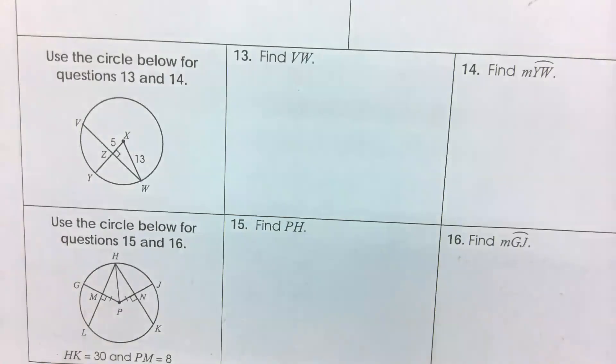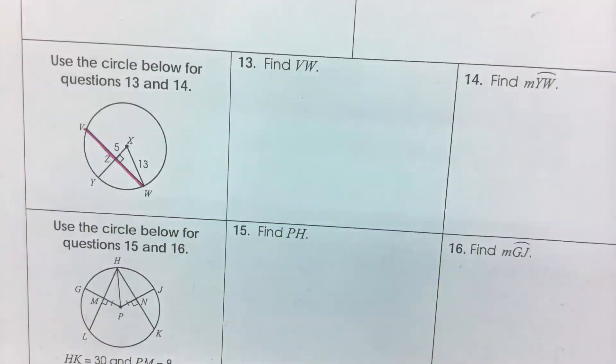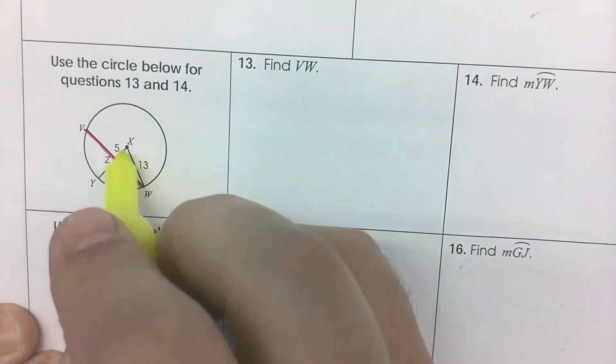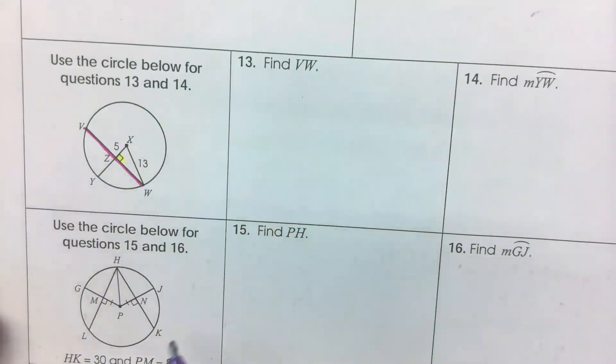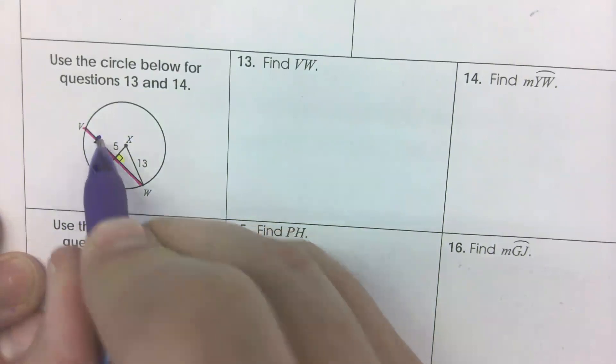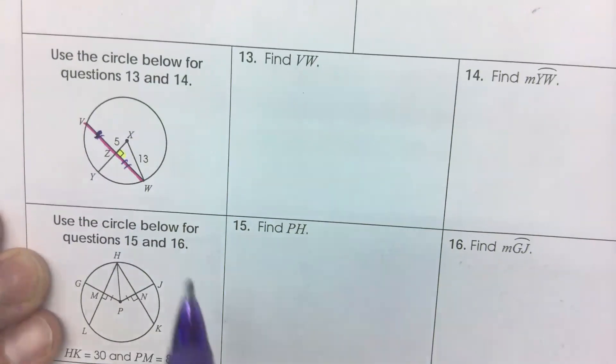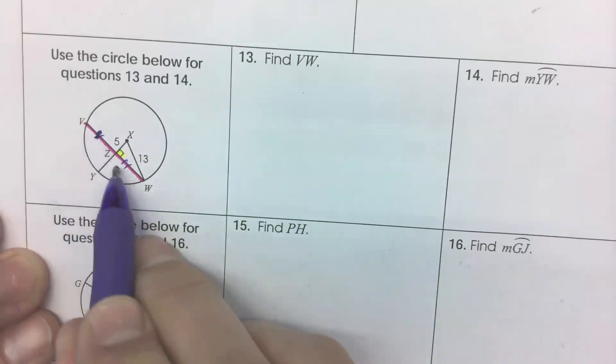Last one I want to show you is number 13 here. We're supposed to find VW. What do we see in there? What's enticing to us? The right angle? What do you think, Kenyan? XY, BX, XV, W. Good. XY, because it's perpendicular, bisects VW. So whatever that length is, is the same as that length. Would you guys stop talking, please? Okay. So whatever this side is, will be the same as this part. So how can I find this part? Yeah, Pythagorean theorem.